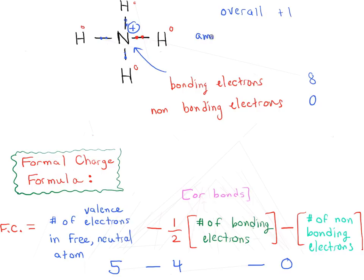This is often called the ammonium cation. You'll see the '-ium' suffix used a lot in cases where a molecule has a positive charge — for example, oxonium, hydronium, ammonium, phosphonium. These '-ium' endings often refer to a positive charge.